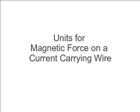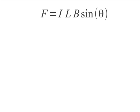Let's take a look at our units for the magnetic force on a current carrying wire. Here's the equation that we came up with on our last video tutorial. It tells us that the force is equal to the current times the length of the wire times the magnetic field strength times the sine of the angle in between the wire and the magnetic field.